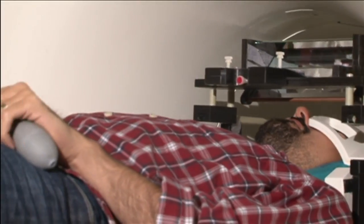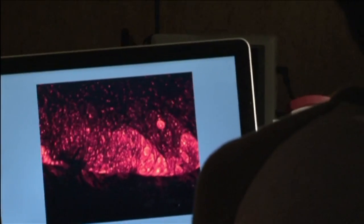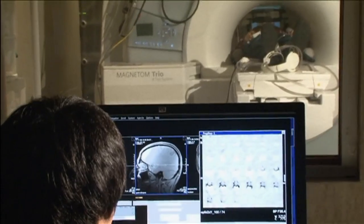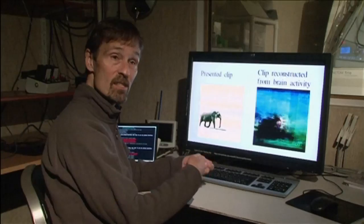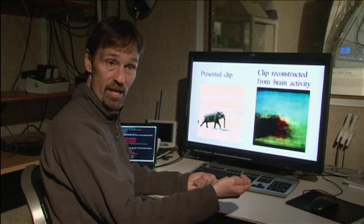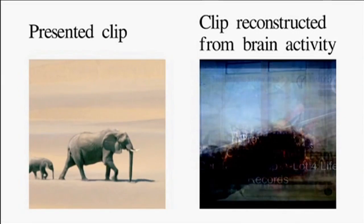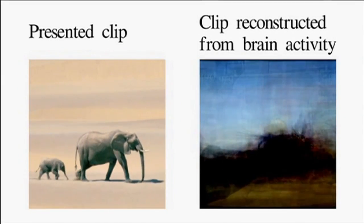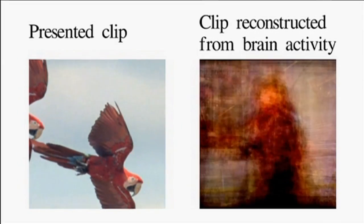First, we put people in the magnet for several hours, and we show them movies, and we build a model of their brain. And then in the second part, we put them back in the magnet, we show them new movies, and we measure their brain activity, and we decode their brain activity in order to reconstruct the movie. So on the left here is the movie we actually showed people, and on the right is our reconstruction.